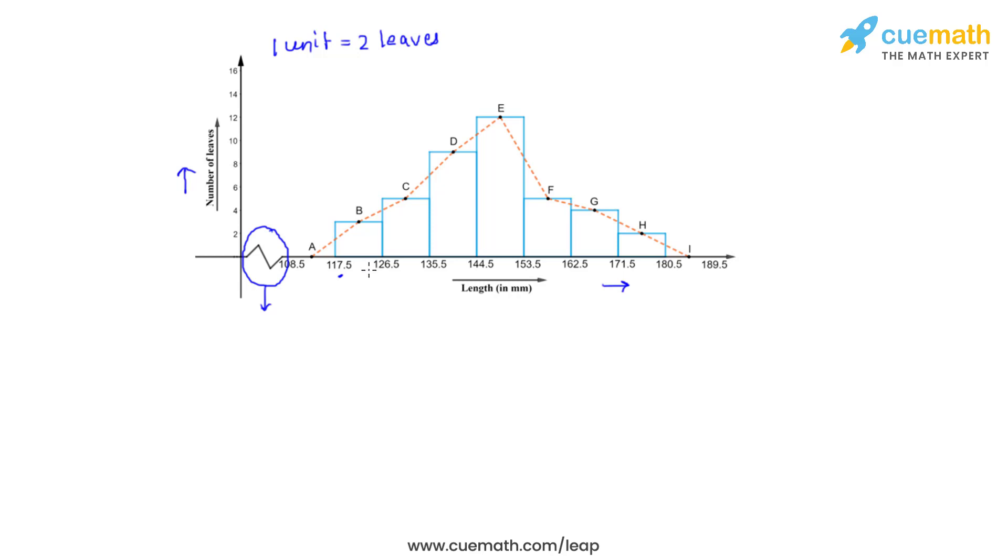Now apart from histogram the suitable representation can be a frequency polygon, and to do that we join the midpoints of each of the rectangular bars. So the midpoint for the first rectangular bar is B and then we have C, D, E, F, G and H. They are all joined by the dotted lines as shown in the graph.